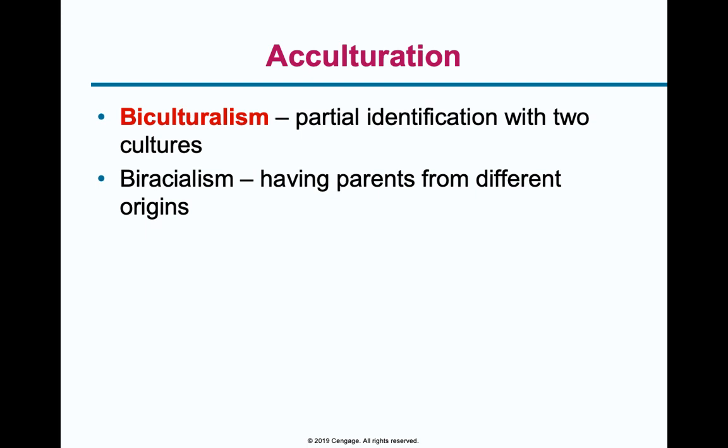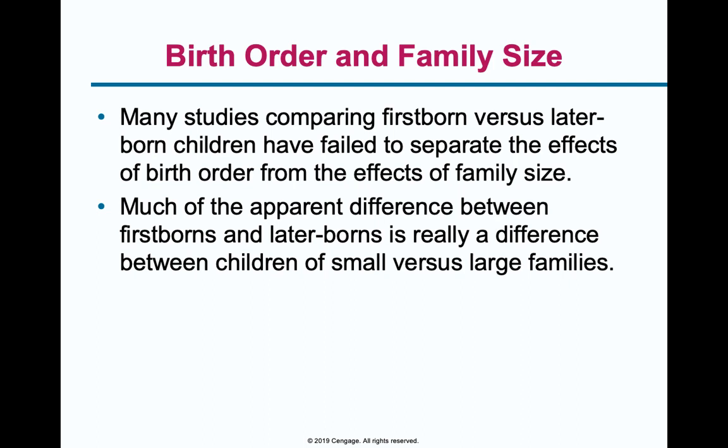Acculturation and biculturalism address what happens when you have two cultures or two different racial backgrounds — how layers of discrimination affect your development. How does your parents' socioeconomic status affect your development? Being rich or poor, or Black versus white — these effects are all sociocultural variables, not biological. Researchers have also studied birth order and family size in relation to development. The idea that firstborns are better or worse than lastborns is not supported, but family size does matter because it influences time with parents and whether your voice was heard.